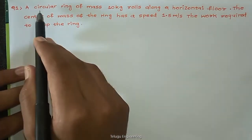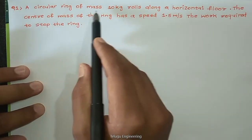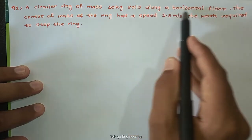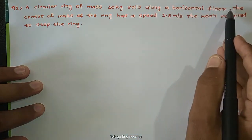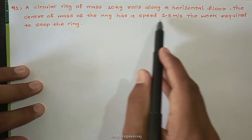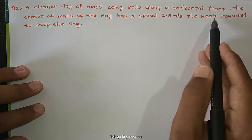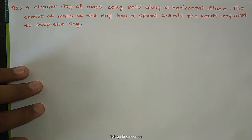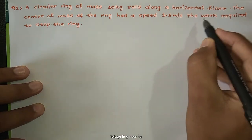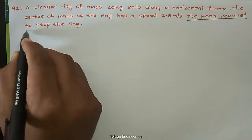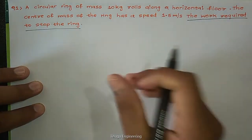Now this is the 91st question. A circular ring of mass 10 kg rolls along a horizontal floor. The center of mass of the ring has a speed of 1.5 meters per second. The question asks for the work required to stop the ring.